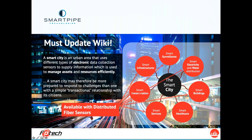If we look at the different aspects of a smart city shown in the diagram on the right, you see things like smart transportation, smart infrastructures, surveillance, electricity and water distribution, buildings, healthcare, and services. Distributed acoustic sensing or distributed fiber sensors can participate in at least six of those seven applications. I think we need to update Wikipedia because fiber optic sensors are also going to contribute to the smart city environment.